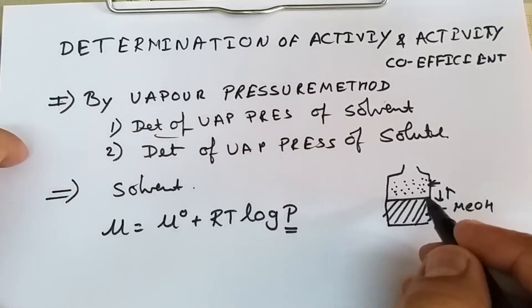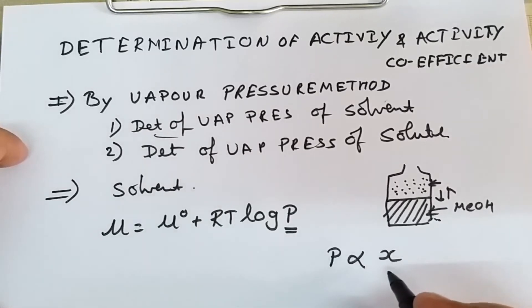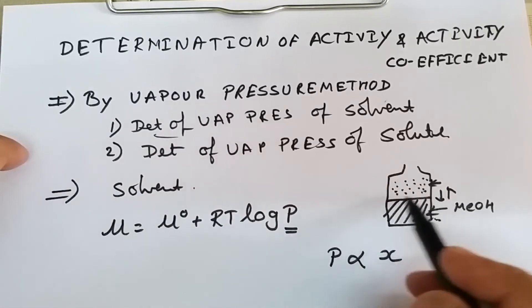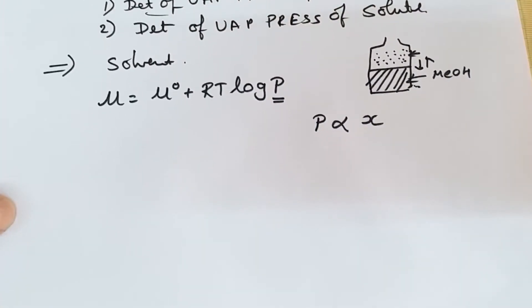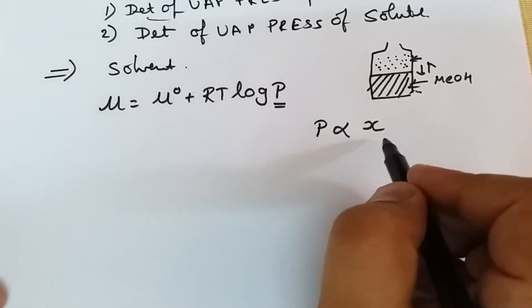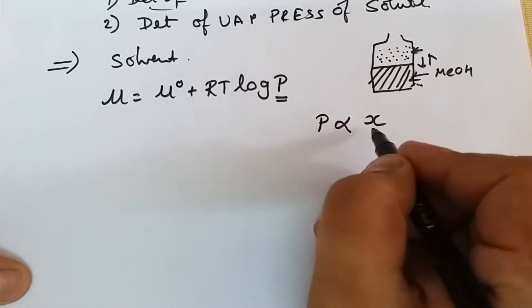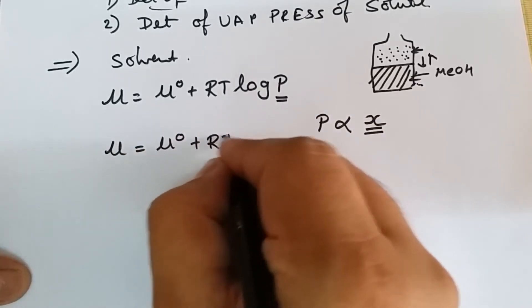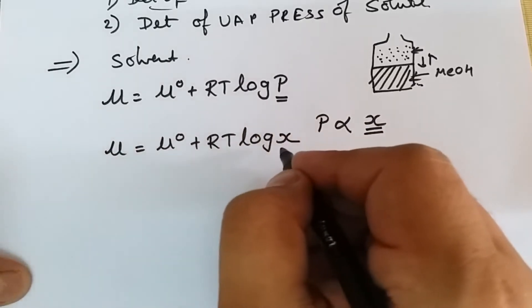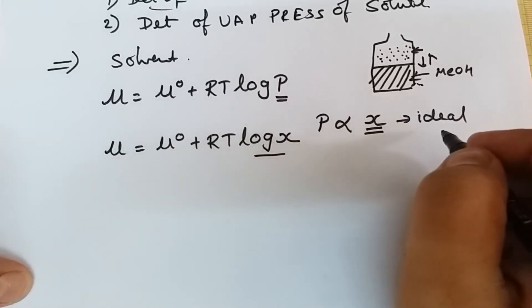If we consider that the vapors are behaving ideally, then the partial pressure is proportional to the mole fraction of the component in solution. If methanol vapors are behaving ideally, we can substitute mole fraction in place of partial pressure, and our equation becomes μ = μ° + RT ln(x). This is for an ideal system.